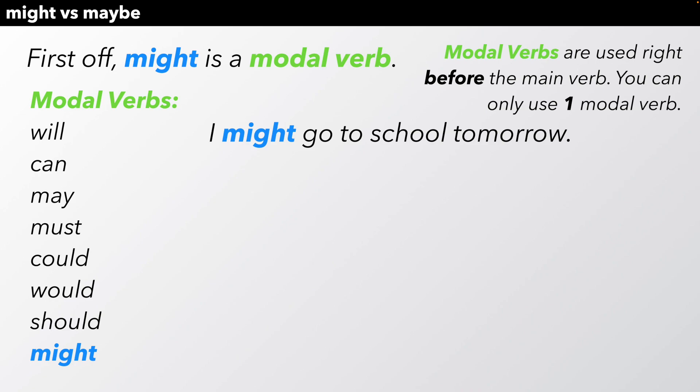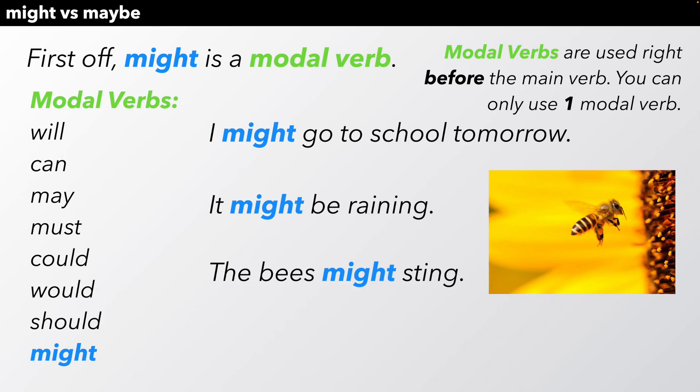For example, I might go to school tomorrow. Might comes right before go. And we cannot say, I might can go to school tomorrow. Nope. Only one modal verb at a time. It might be raining. The bees might sting. She might give us homework. All of these sentences show you that the word might, used as a modal verb, comes right before the main verb.